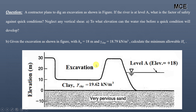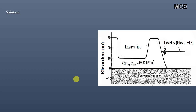In the first case, we have to find to what elevation the water can rise on the right-hand side before a quicksand condition will develop on the left-hand side. We also have to find the factor of safety against the quicksand condition for the given situation.